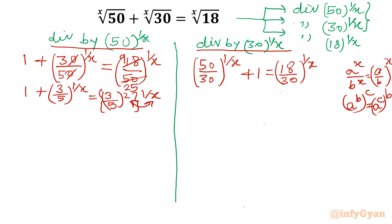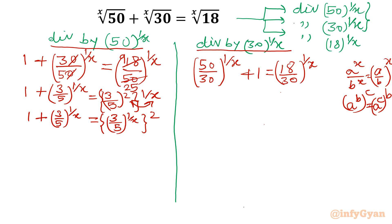So in the next step I will write (3/5)^(1/x) equal to [(3/5)^(1/x)]². Now substituting: let y = (3/5)^(1/x). The equation becomes 1 + y = y², or y² - y - 1 = 0.